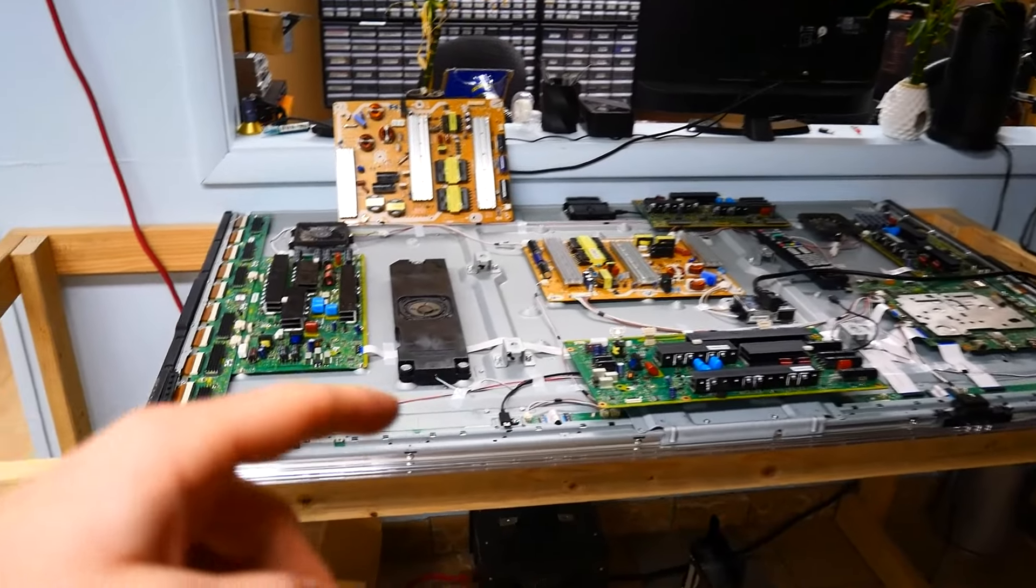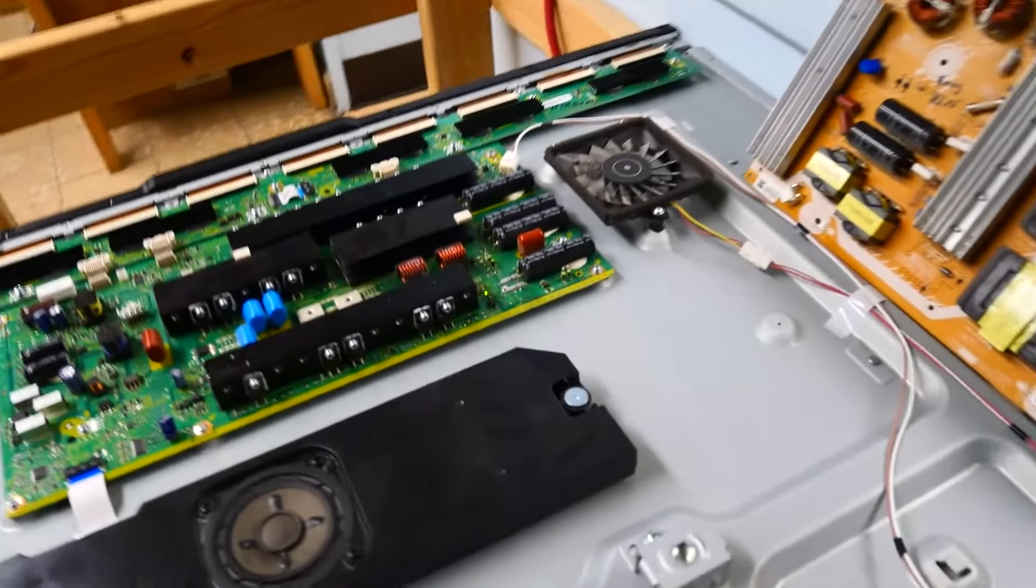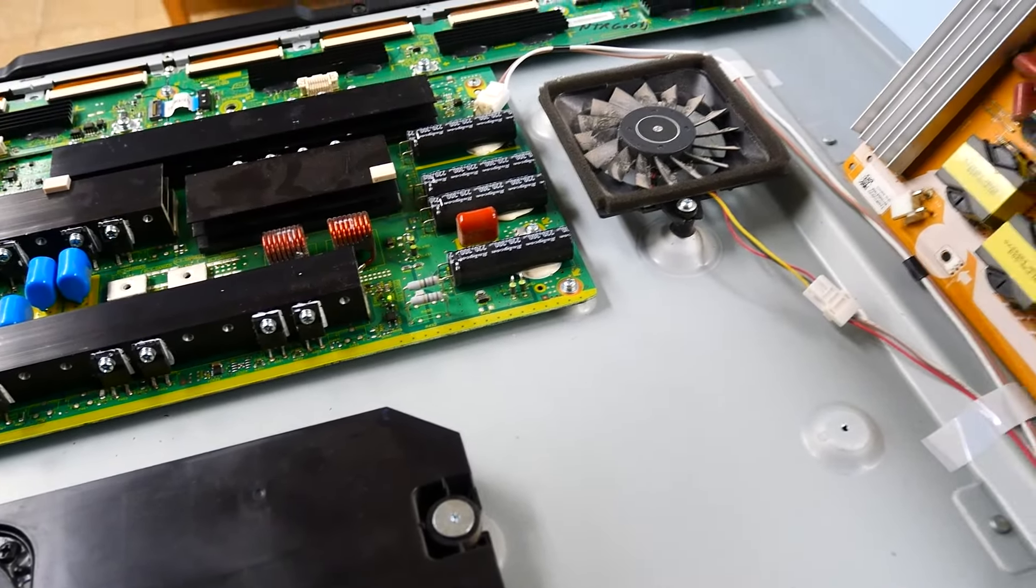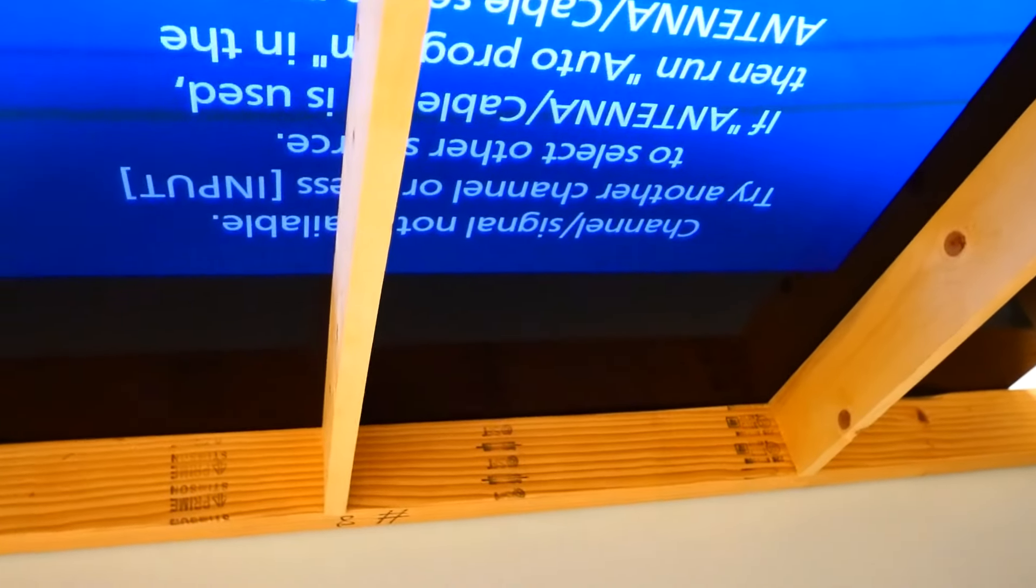So this is our test TV, and we have our SC board plugged in. Let's go ahead and power up the set. Now we're supposed to get a green light right here, which we are getting, and let's see our fans. Our fans are spinning. Let's take a peek here, and we do have picture on screen. Wonderful.